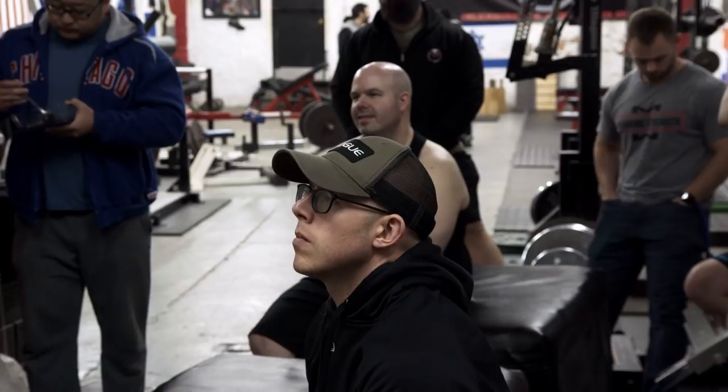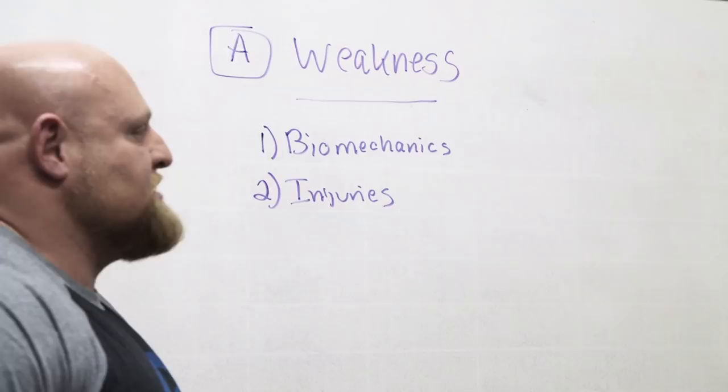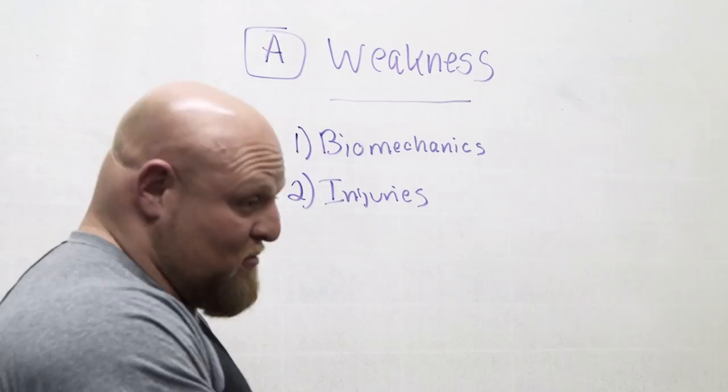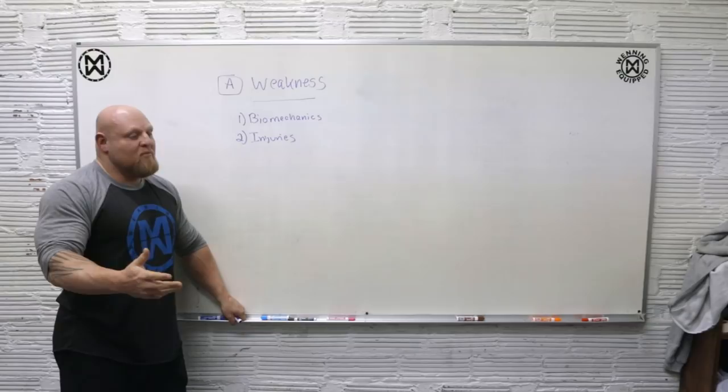So we've got biomechanics. What's some other things that could change how we train? So we got injuries. So injury rates. Now if we have injuries, say we've had a pec tear, pretty common, or we've had a rotator cuff problem, we might have to modify the exercises we select in the ways we're going to get stronger.